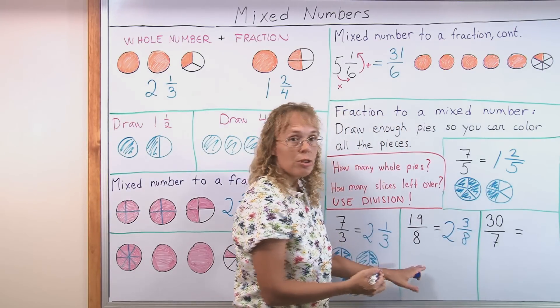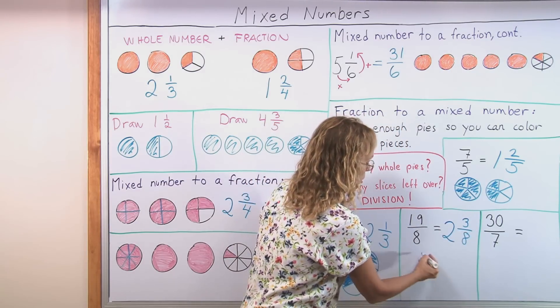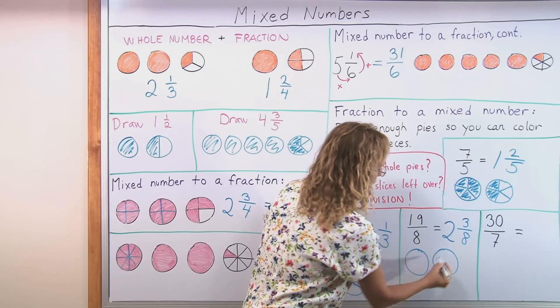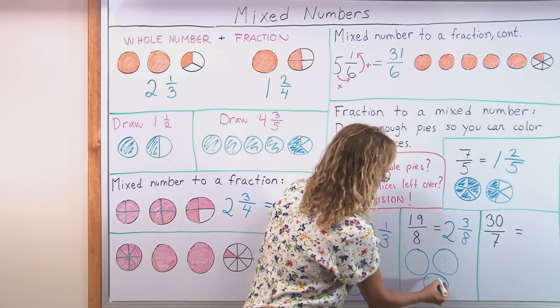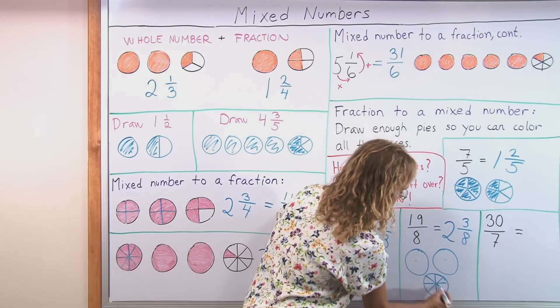And to make sure a student can still draw this whole process. The two whole pies that take 8 here. Eight slices here. And this will be then the 3 eighths from here.